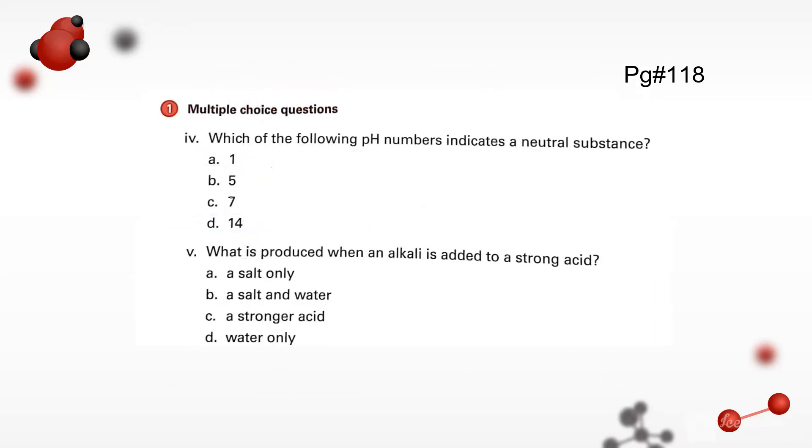Come towards the fourth part. Which of the following pH number indicates a neutral substance? We all know that 7 and probably 8 is the neutral number in pH scale. So 7 is the neutral number. Which is produced when an alkali is added to a strong acid? A neutralization process occurs and as a result, a salt and water is formed. Option B is the correct one.